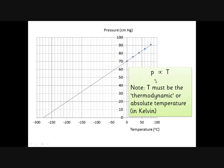This doesn't look like a proportional relationship if we use Celsius, because the graph doesn't go through the origin. But if we move our origin to minus 273, it would be a proportional relationship. Gay-Lussac's law states that pressure is proportional to temperature, but you must measure temperature in thermodynamic or absolute temperature, which is measured in Kelvin. Zero degrees C is 273 K, 100 degrees C is 373 K — just add 273 to degrees C to get Kelvin. Using that scale, pressure is proportional to temperature.